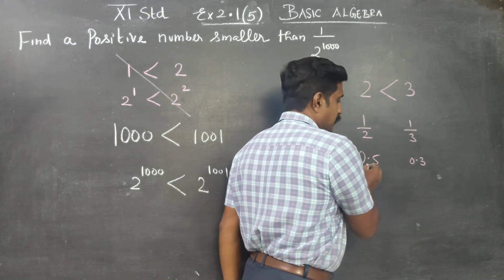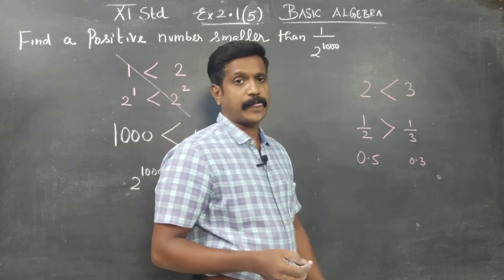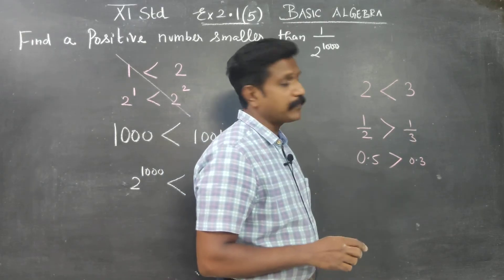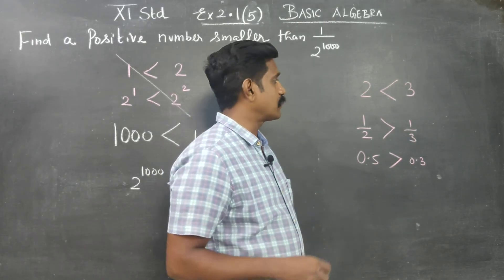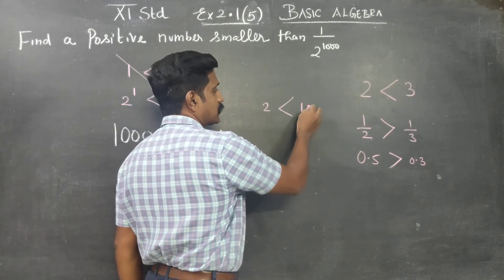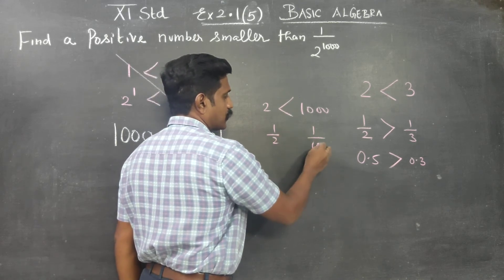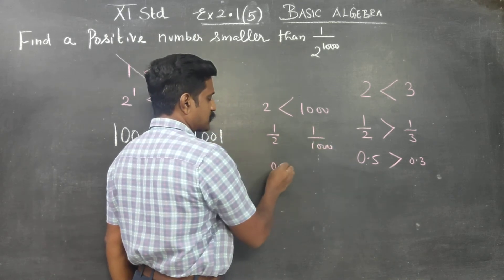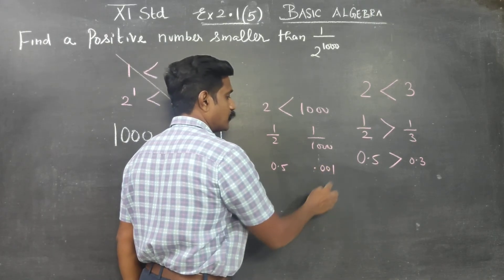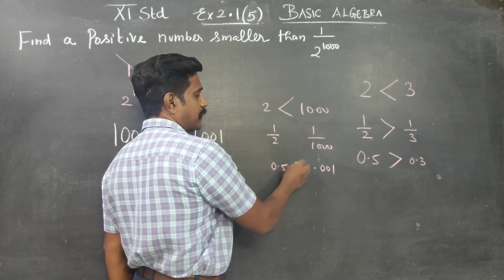This becomes bigger and this becomes smaller when we take the reciprocal. For example, 2 is less than 1000. 1 by 2 gives 0.5, 1 by 1000 gives 0.001. 0.001 is a very very small number compared to 0.5 — so 0.5 is bigger.